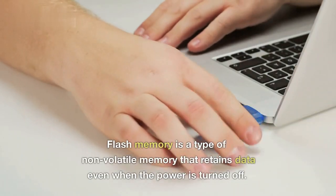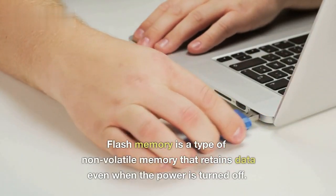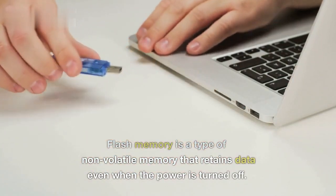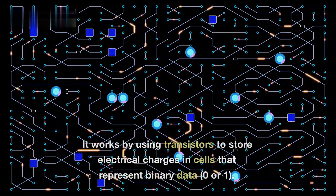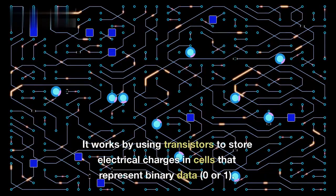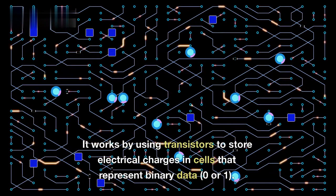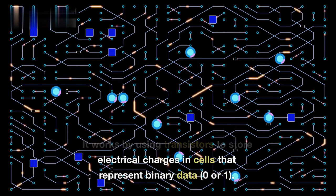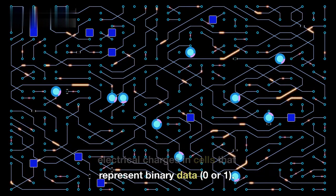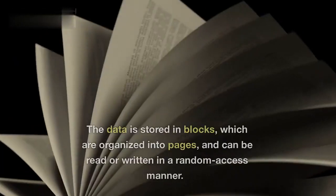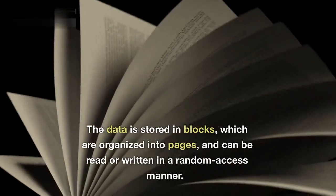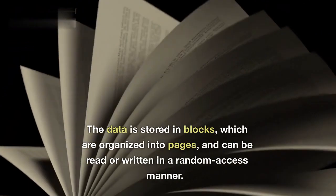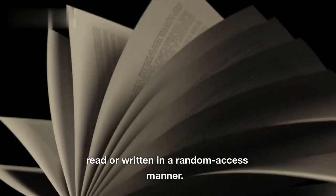Flash memory is a type of non-volatile memory that retains data even when the power is turned off. It works by using transistors to store electrical charges in cells that represent binary data — zero or one. The data is stored in blocks, which are organized into pages, and can be read or written in a random access manner.